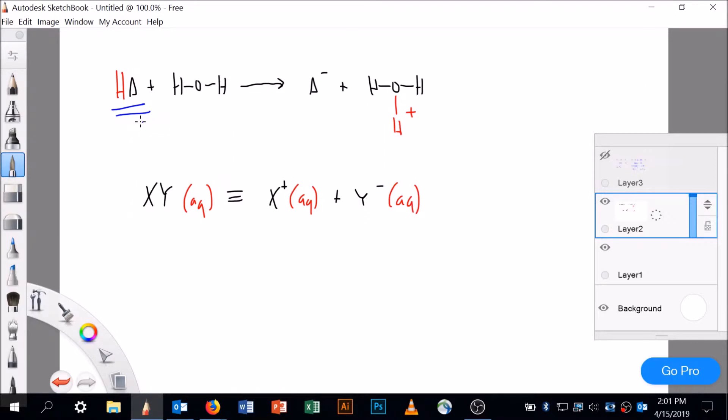So if H+ comes off, it's left like that, and if the H+ goes on to here plus H+, then you can see what's going on. So the H+ comes off the acid by definition because it's an acid.